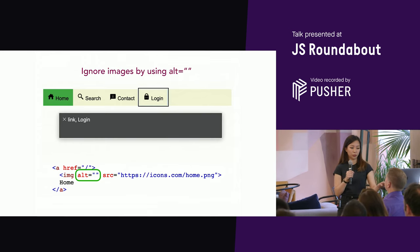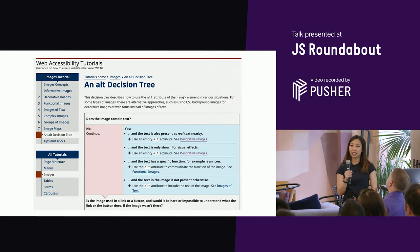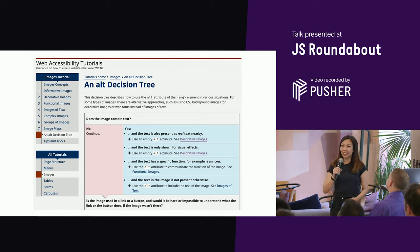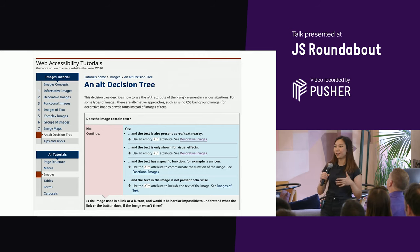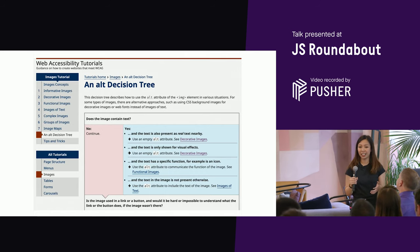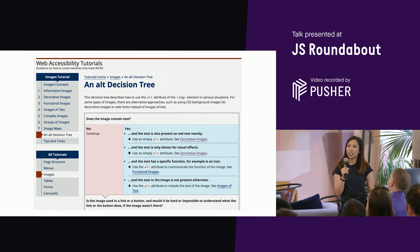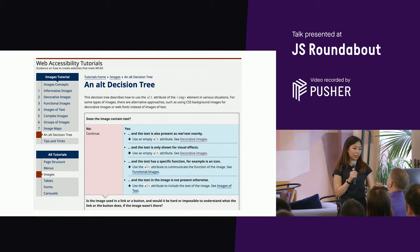If you're still confused, W3C has come up with an alt decision tree. I've provided the link on my Twitter account — the hashtag is jsroundabout a11y — so you can just visit it there.